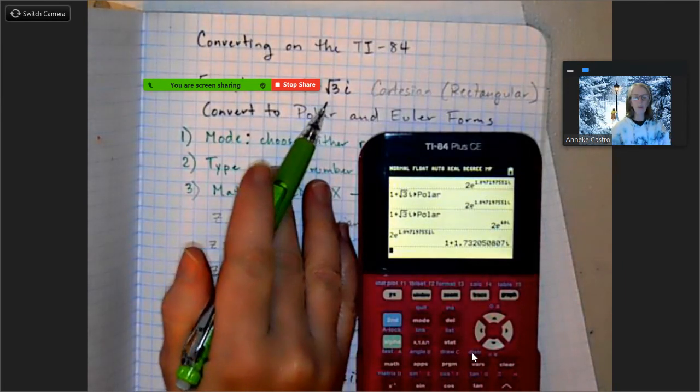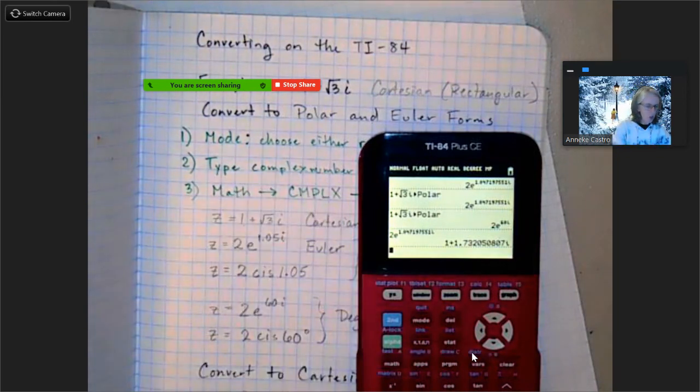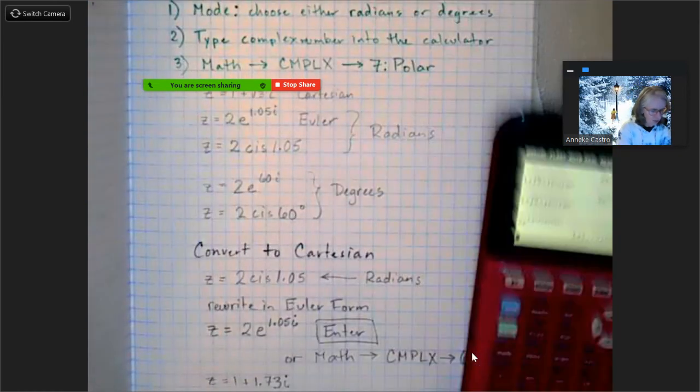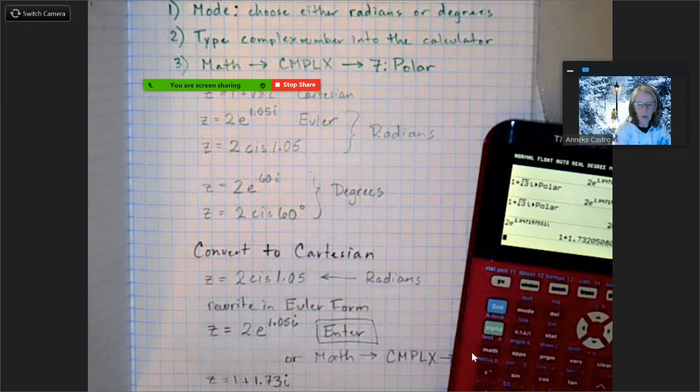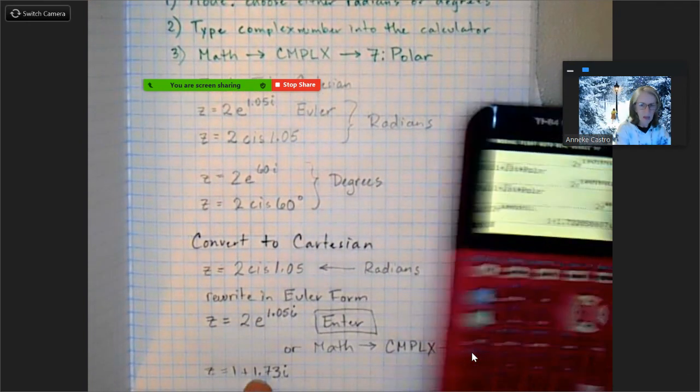But if you don't have sweet numbers like square root of 3, square root of 2, stuff like that, if you don't have that to begin with, no worries, decimals are fine. So this is basically the decimal equivalent of 1 plus the square root of 3i.